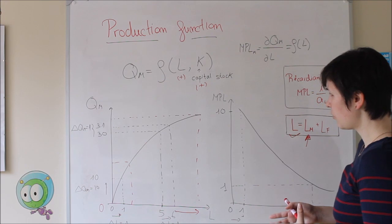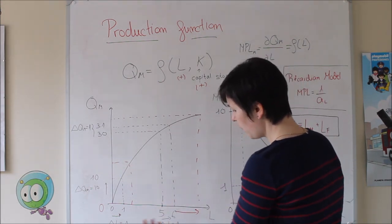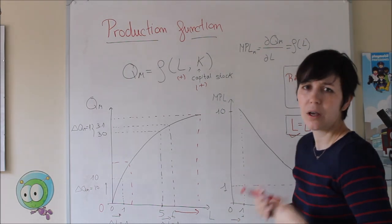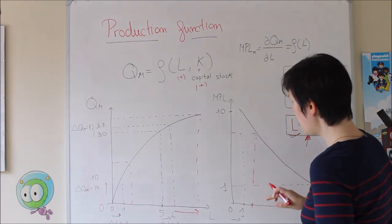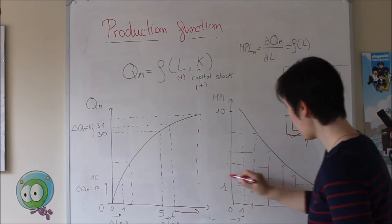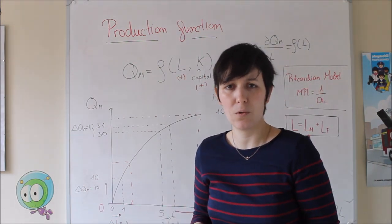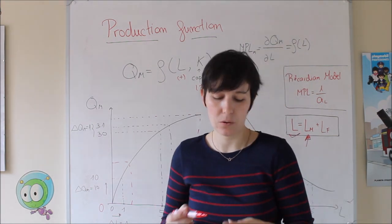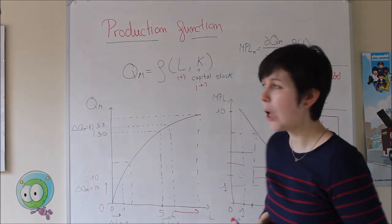The marginal product of labor is another way to see this. At the very beginning, labor is really productive — it's good to incorporate more workers because production is really high. But as higher is the number of workers in one industry, the production added by each new worker is smaller and smaller. There will be a point where instead of adding more labor here, it's better to put labor in the other sector where it's going to be really productive. The same analysis done for manufacturing can be done for food.